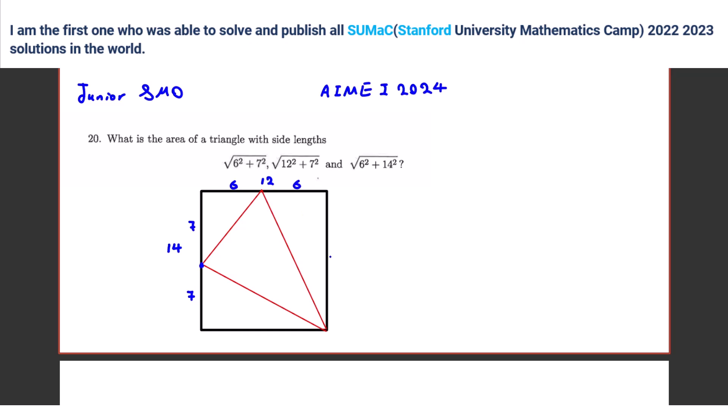So it is 6, 6, this one is 14, so the area is, answer is 14 times 12 minus these areas, right?